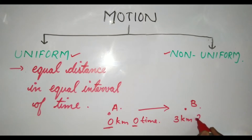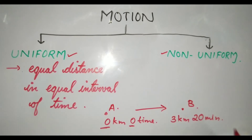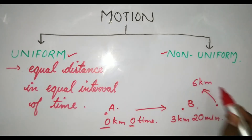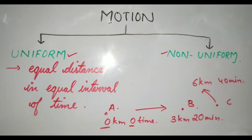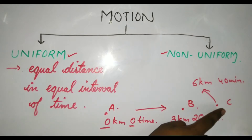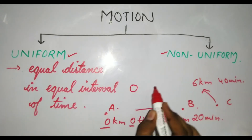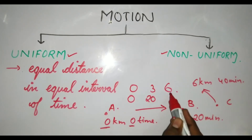Now suppose the bicycle goes further to point C. At point C, the distance covered is six kilometers and the time taken is 40 minutes. So observe: starting position zero, then three kilometers, then six kilometers. Time taken: zero, then 20 minutes for three kilometers, then 40 minutes for six kilometers.